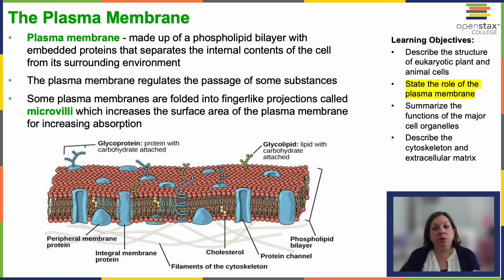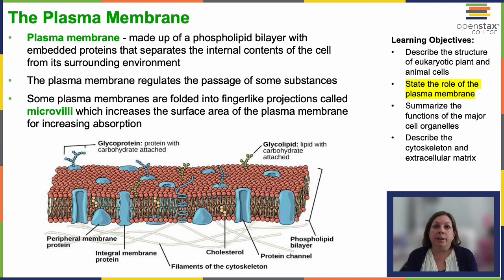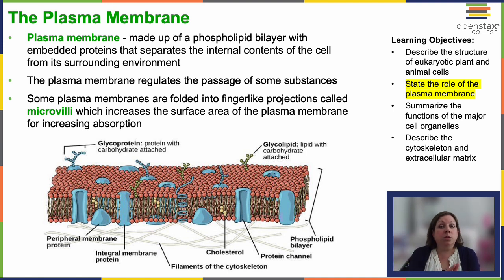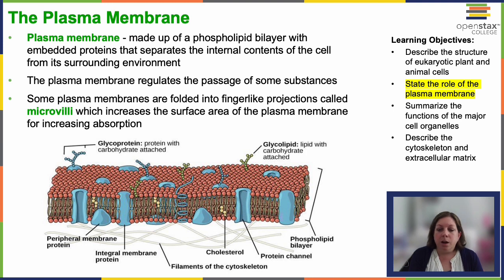One of the many adaptations found in specialized cells is something called microvilli. These are minute finger-like projections that are really rich in actin filaments, and they significantly increase the cell's surface area. We see these kinds of cells in places like your digestive tract, where you want to increase the surface area of the barrier between your intestine and your bloodstream so that as many nutrients can be absorbed as possible. We also see these in sensory cells, where that enhanced surface area optimizes the process of perception, like in your eyes.